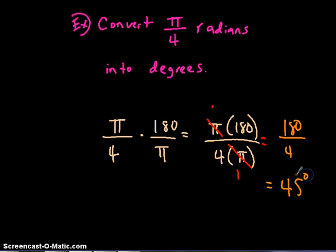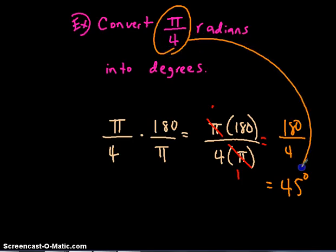You divide 180 by 4 and you wind up getting 45 degrees. So pi divided by 4 equals 45 degrees.